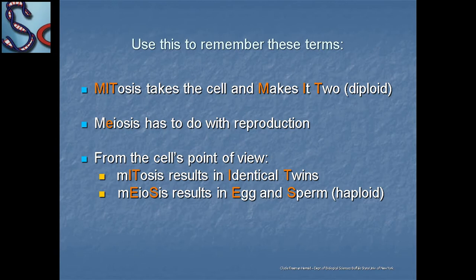From the cell's point of view, mitosis results in the identical formation of cells, whereas meiosis results in different egg and sperm types of cells.